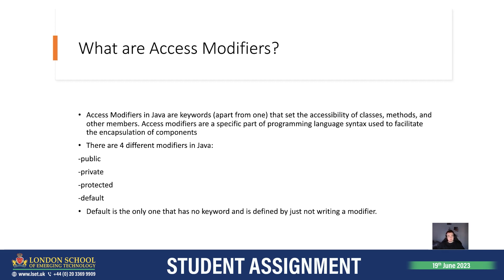We have four different modifiers in Java: public, private, protected and default. When I said they are all keywords apart from one, I meant default, because this is the only one that has no keyword and is defined by just not writing a modifier. So if we want to make something public, we put public first. When we want to have something default, we just don't write anything.